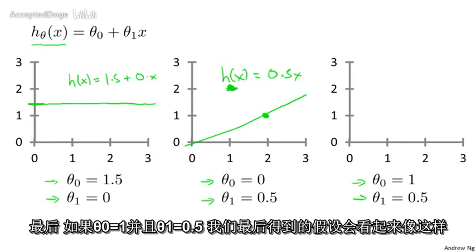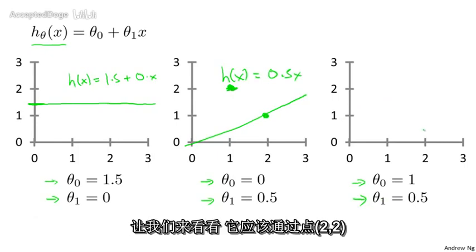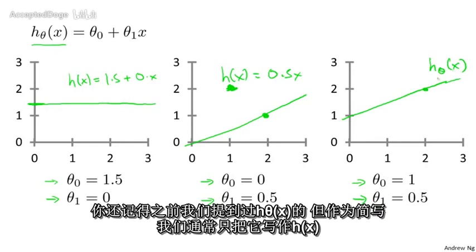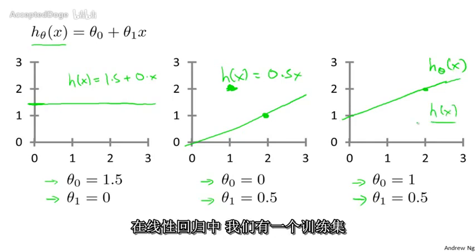And finally, if θ₀ equals 1 and θ₁ equals 0.5, then we end up with a hypothesis that looks like this. It should pass through the (2,2) point, like so, and this is my new h(x), or my new h subscript θ of x. Well, you remember I said that this is h subscript θ of x, but as a shorthand, sometimes I'll just write this as h(x).